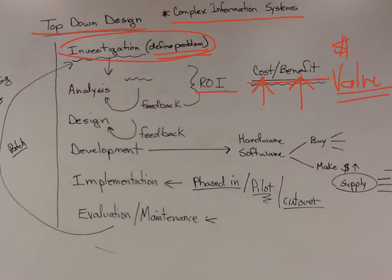We called it return on investment, but it doesn't necessarily have to be money. Okay, so we already talked about feedback, design, then development, buy hardware, and software. Software, now you can buy it, or you can make it, and there's typically some wiggle room in between there, which is more expensive.